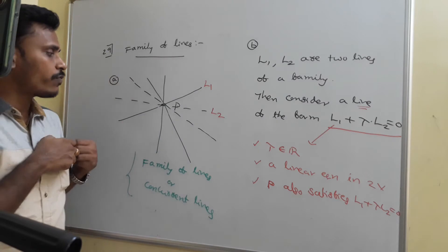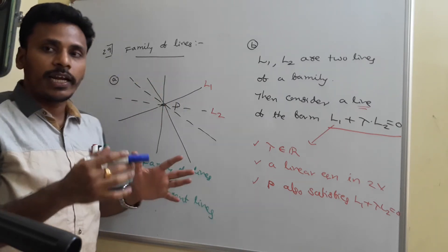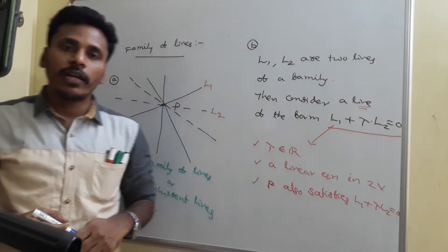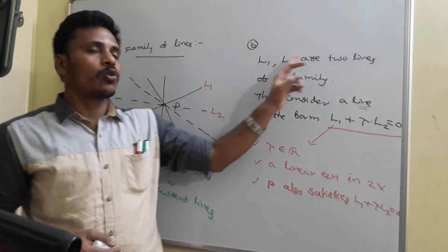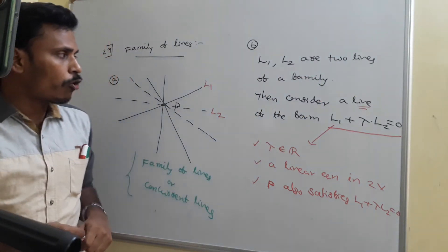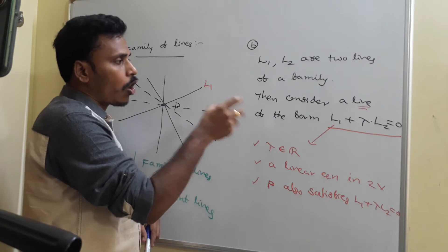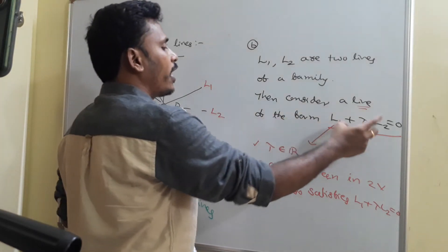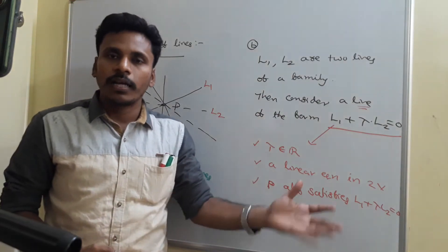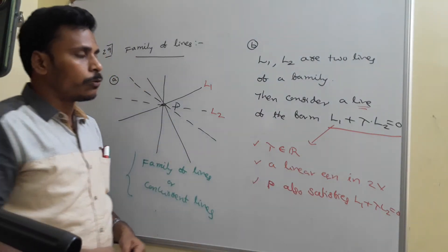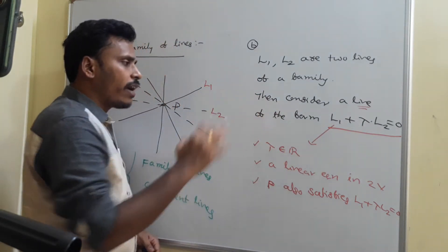I have a family of lines passing through a common point P. Among the infinite number of lines, I identify two lines L1 and L2. Now I consider a line of the form L1 plus lambda L2 equals 0 — first line plus lambda, a real number, multiplied with L2. Lambda is a real number so we can take any value, that's the first observation.